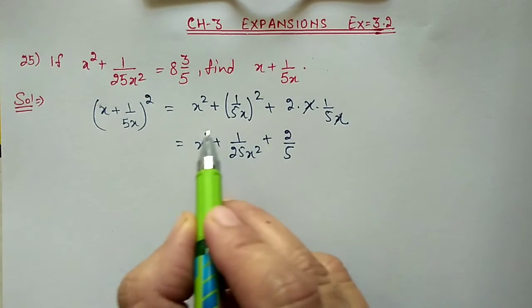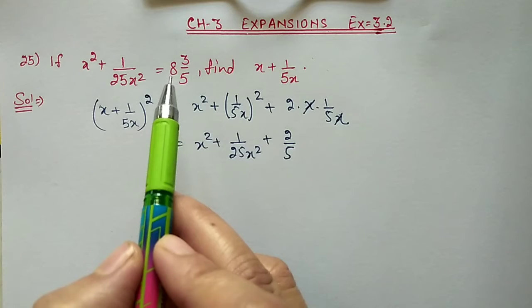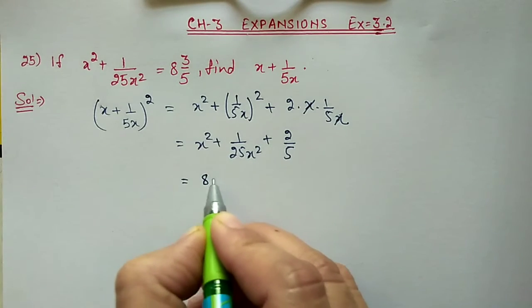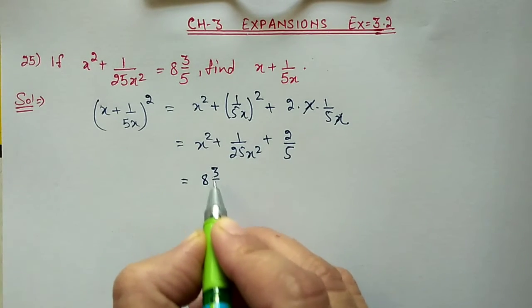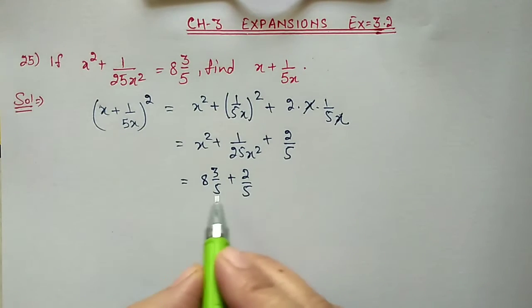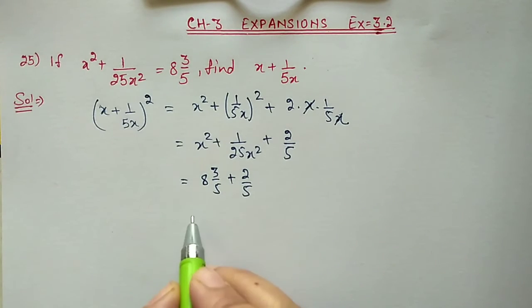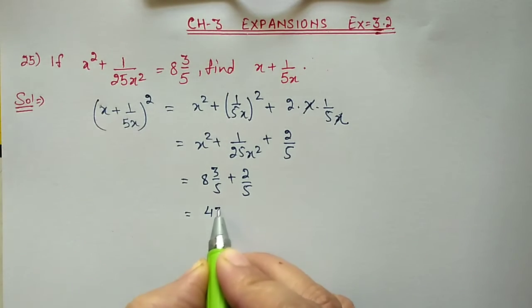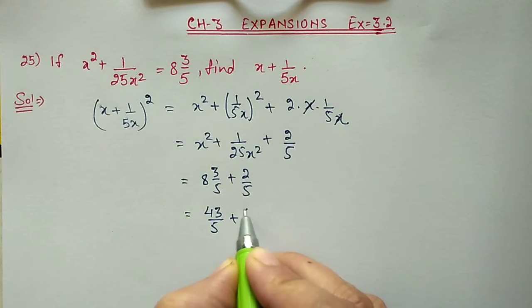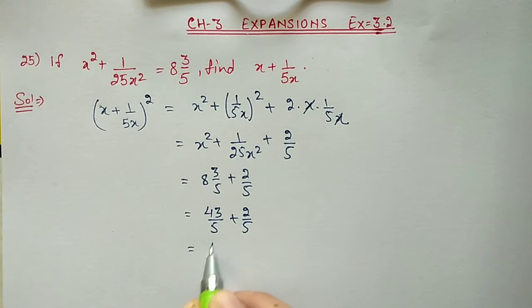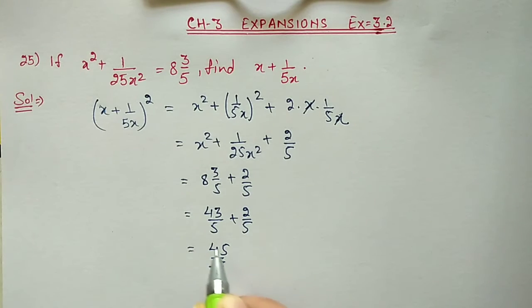Now in place of x² + 1/25x² we substitute the value 8 whole number 3/5 given in the question. So we have 8³/5 + 2/5. Converting to improper form: 8×5+3 = 43/5, plus 2/5 gives 45/5.